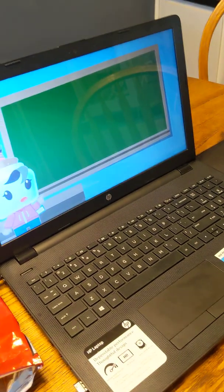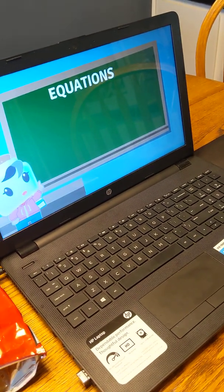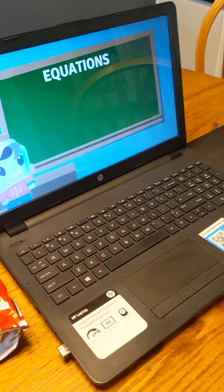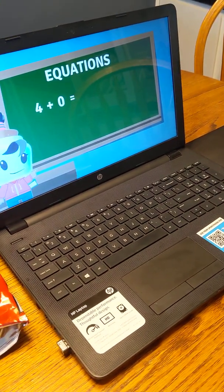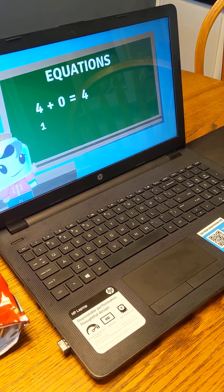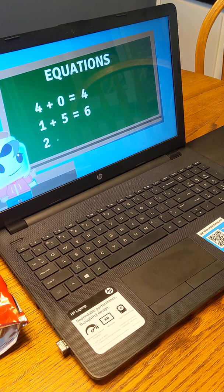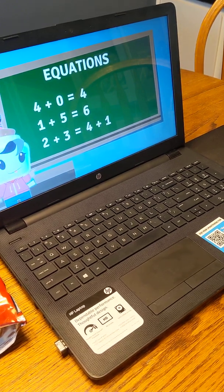First, let's find out what equations are. Here are some examples: 4 plus 0 equals 4, 1 plus 5 equals 6, 2 plus 3 equals 4 plus 1.